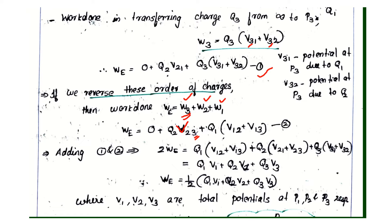Finally, W1 equals Q1 into the potential at P1 due to Q2 and Q3, that is V12 plus V13. This is equation number 2.